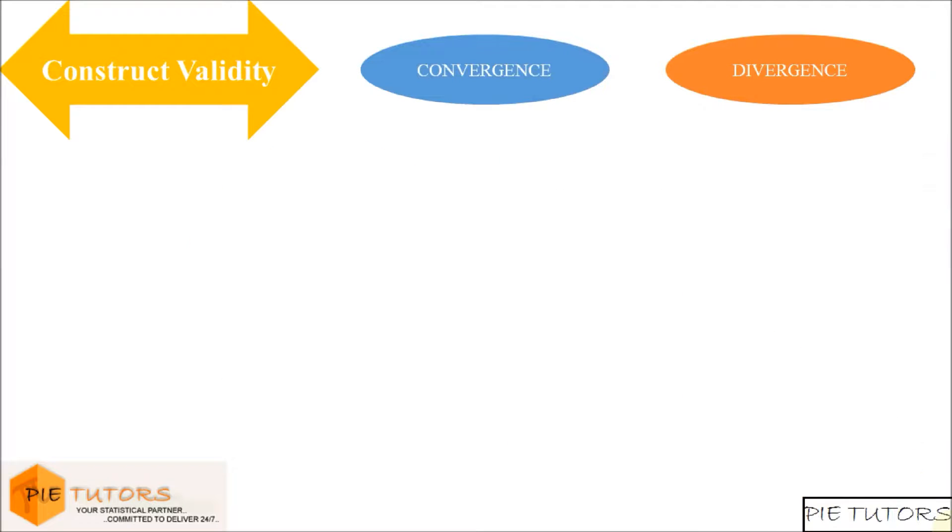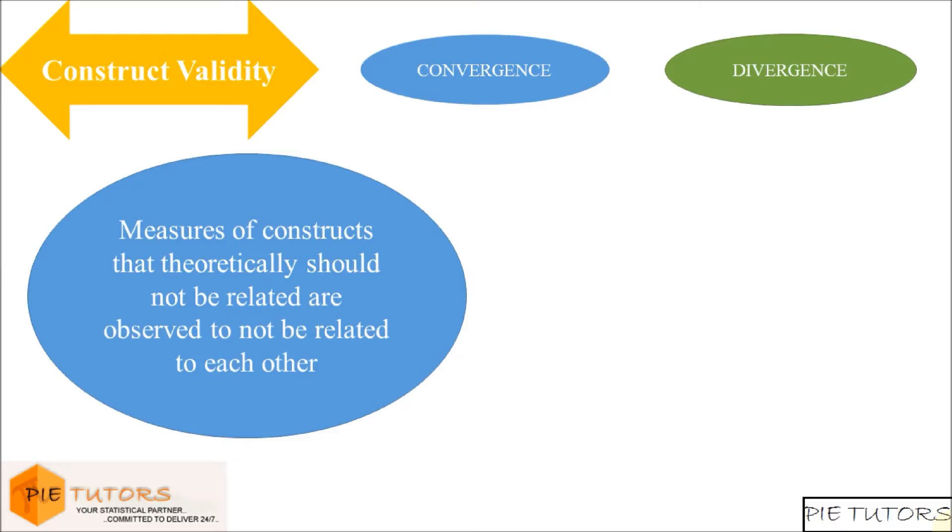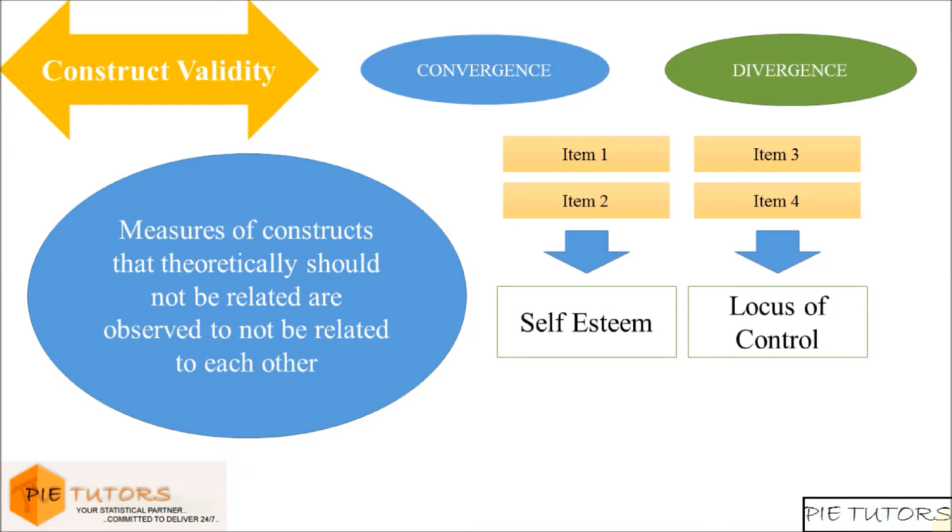Next, we look at divergent validity. In order to establish divergent validity, it is required to show that the measures of constructs that theoretically should not be related to each other are, in fact, observed to not be related to each other. For example, if there are four items out of which two items reflect the construct of self-esteem while the other two items reflect the construct of locus of control.